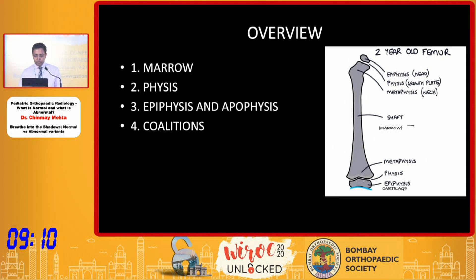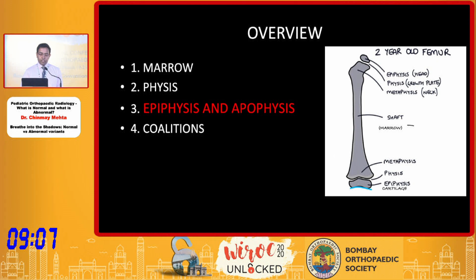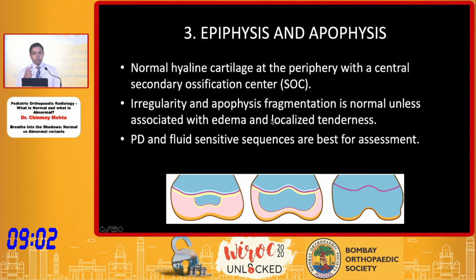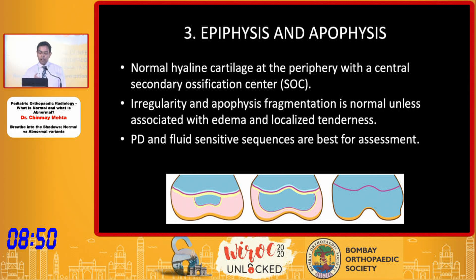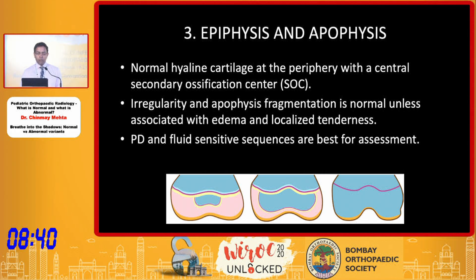Let's look at the third section — the epiphysis and the apophysis. The normal epiphysis has a peripheral high-signal cartilage with a growing secondary ossification center. Center irregularity and apophysis fragmentation may be seen even in normal patients unless there is associated edema or localized tenderness. Do not call any fragmentation as Osgood-Schlatter or similar unless there is localized tenderness or abnormal marrow edema. PD and fluid-sensitive sequences are the best to assess these.